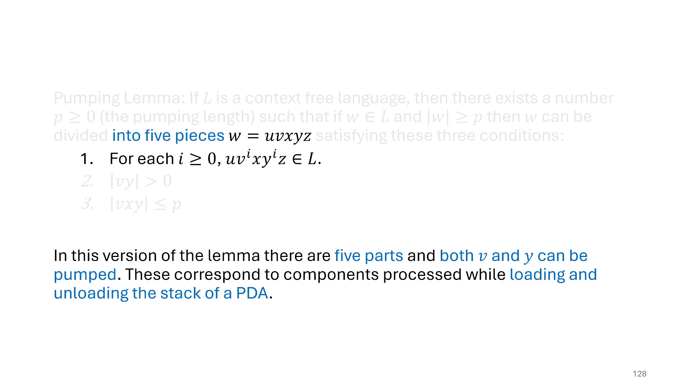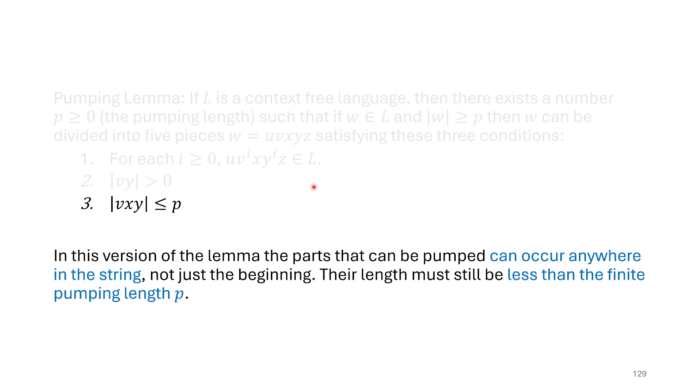So the first bit here is saying that we can break our string now into five pieces. Before it was three, and the parts that we're looking at that are important to us, we can see in this part of the equation here that we're pumping V and Y. These are the pieces that we pump, so these are the parts that are important. And again, I mentioned this is related to when we might load or unload things onto the stack, so five parts now. Now we'll also notice that again, those parts that can be pumped are limited in their length. They have to be less than or equal to P. Again, that's related to maybe how many states there might be in the machine.